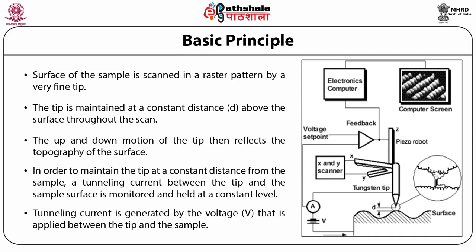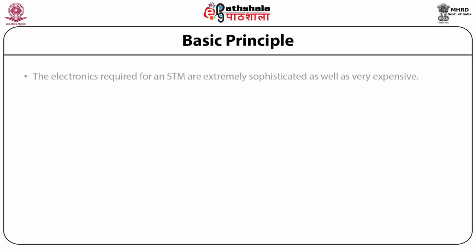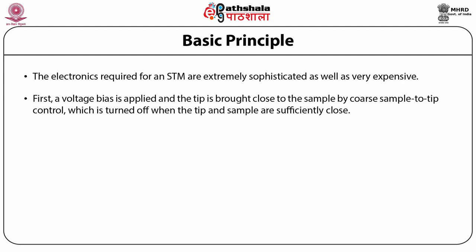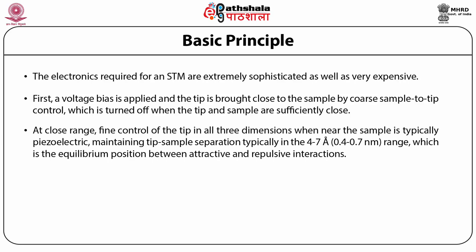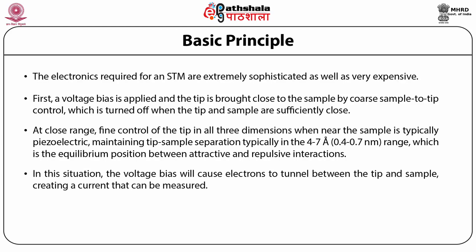STM is a challenging technique as it requires an extremely clean and stable surface, a sharp tip, excellent vibration control, and sophisticated electronics. A voltage bias is applied and the tip is brought close to the sample by a coarse sample-to-tip control, which is turned off when the tip is sufficiently close. At close range, fine control of the tip in all three dimensions — when near the sample — is typically piezoelectric, maintaining tip-sample separation typically in the 4 to 7 angstrom (0.4 to 0.7 nanometer) range, which is the equilibrium position between attractive and repulsive interactions. The voltage bias will then cause electrons to tunnel between the tip and sample, creating a current that can be measured.